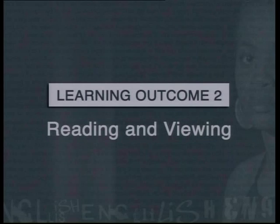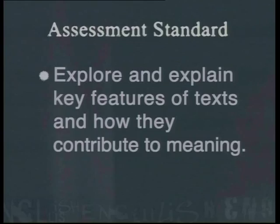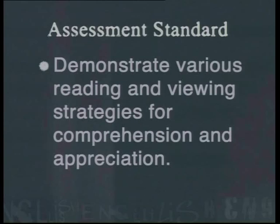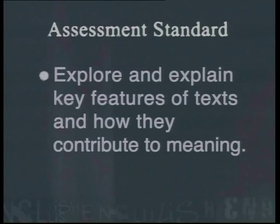The following lesson is linked to learning outcome 2, reading and viewing, and addresses the assessment standard that requires learners to demonstrate various reading and viewing strategies for comprehension and appreciation, explore and explain key features of texts and how they contribute to meaning. Learners should be able to identify and explain the purpose, structure and language used in texts.